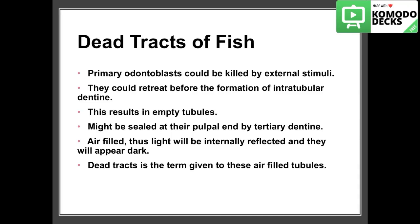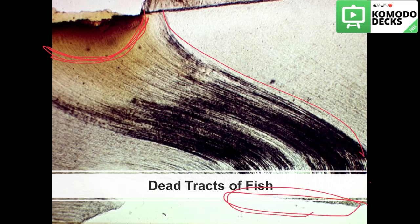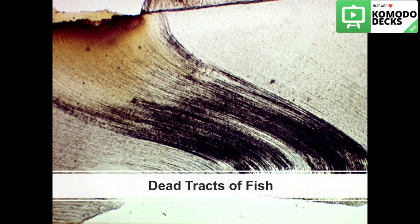But if the stimulus is very fast and very harsh, the odontoblasts lying in the pulp area are killed by the external stimulus. This results in empty tubules that may be sealed at their pulpal end by tertiary dentine. When we see them in histological section, they are air-filled, so under light they appear dark — we call them dead tracts. In this slide, a harsh carious lesion caused the odontoblasts in that area to die, leaving all the tubules empty and air-filled, appearing black under the microscope. These are dead tracts of fish.